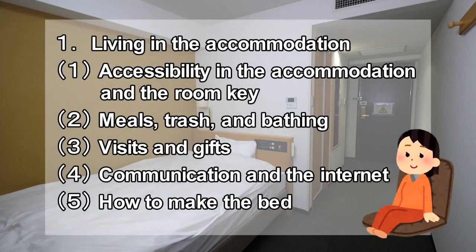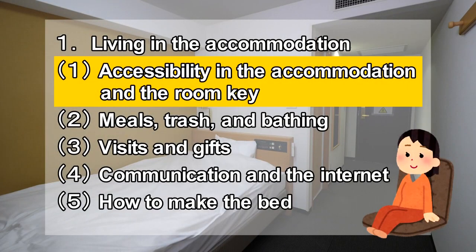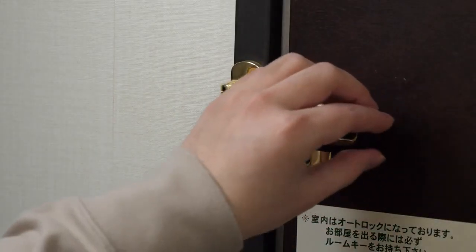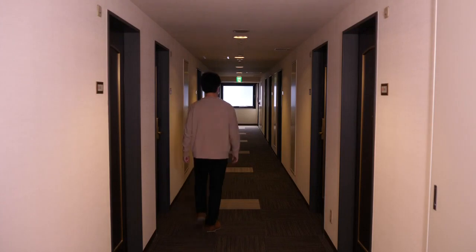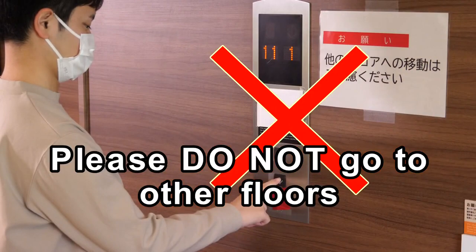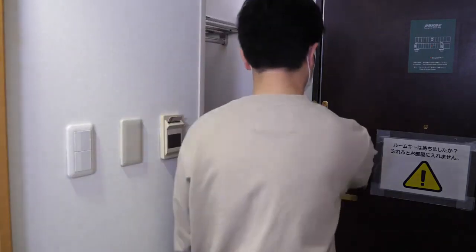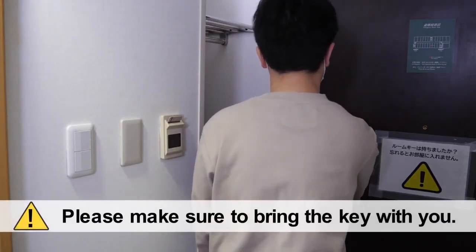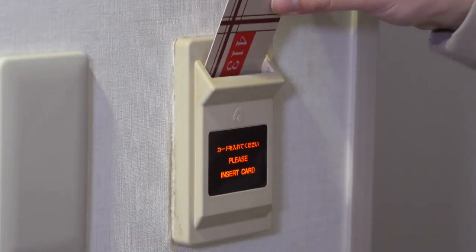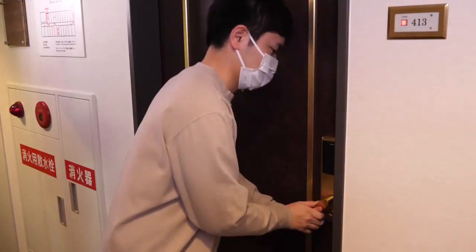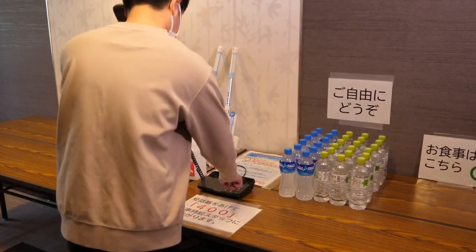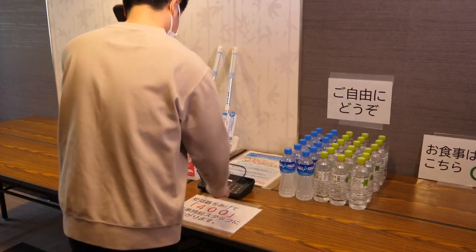Living in the accommodation. Do not use the door chain so that staff can enter the room in case of an emergency. You are allowed to move around on the same floor but are prohibited from going to other floors. If you leave your room without the key, you will be locked out because it has an automatic lock system. Please always have your key with you. If you are locked out, contact the staff office via an extension phone, which are placed on each floor.